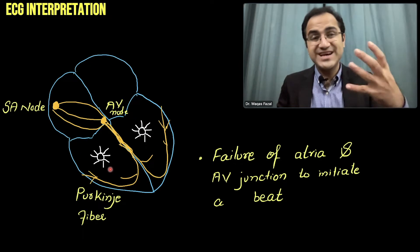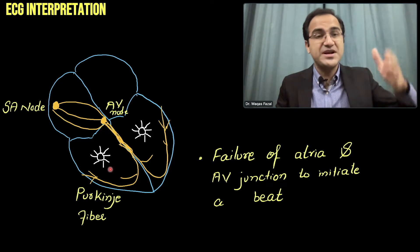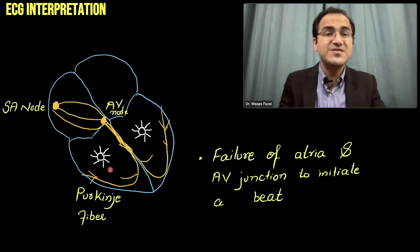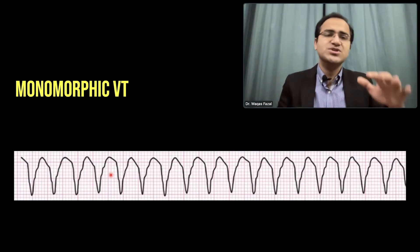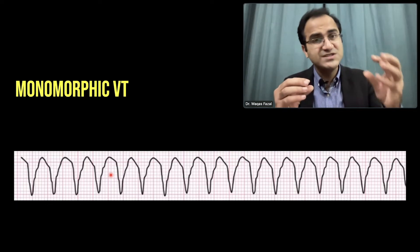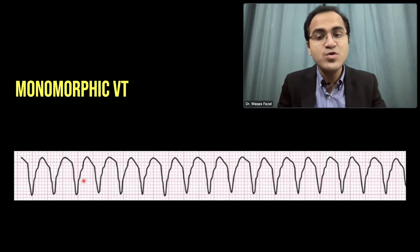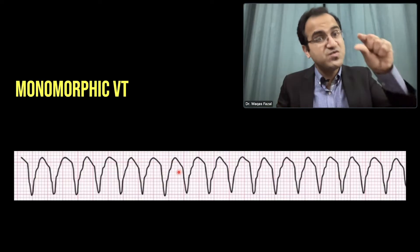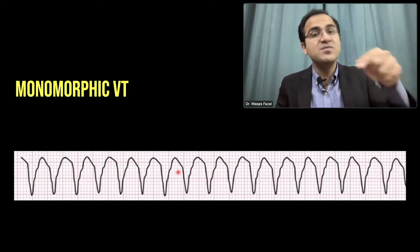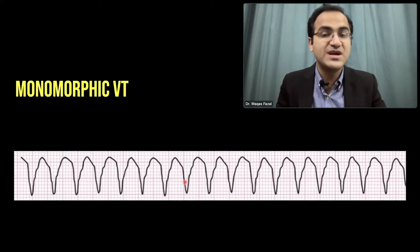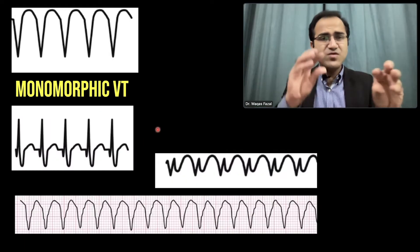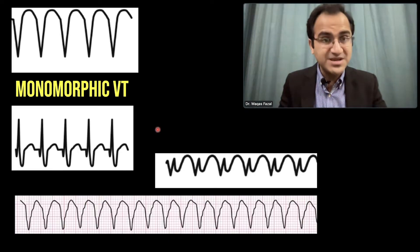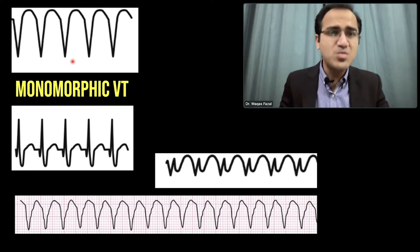These ectopic foci produce electrical currents resulting in ventricular tachycardia — a rapid heart rate with wide QRS complexes. If one focus is dominant over the others, it will produce monomorphic ventricular tachycardia, where the shape of the QRS complex remains the same throughout, since the origin is from one predominant ectopic focus. So one dominant ectopic focus produces the same shape of QRS complexes on the ECG.